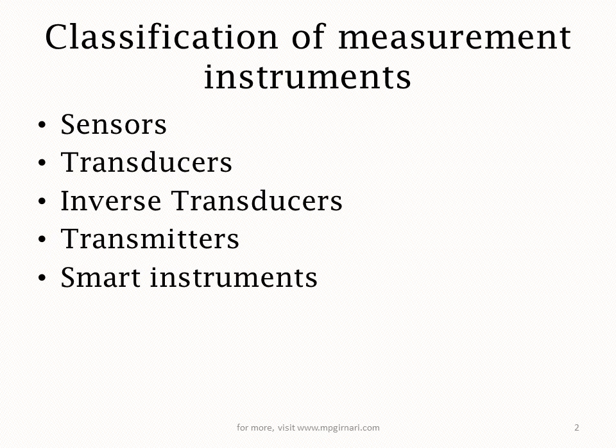If we look at the instrument classification for measurement — if you want to measure any quantity in industry, you need an instrument or a device. The device that measures: the basic instrument is called a sensor, and its advanced versions are transducers, inverse transducers, transmitters, and smart instruments.